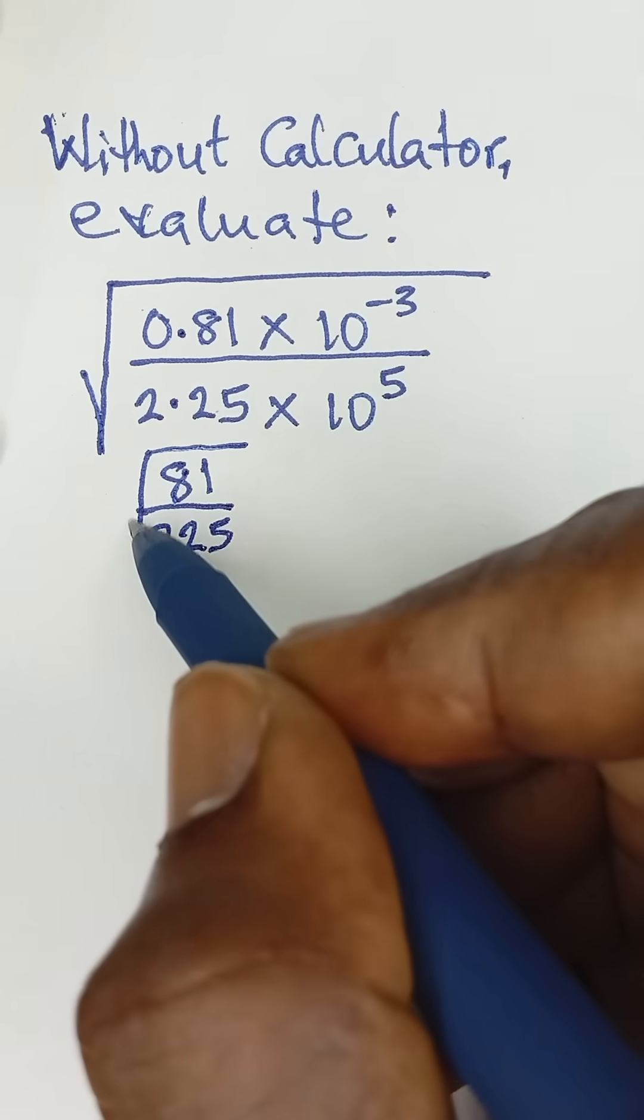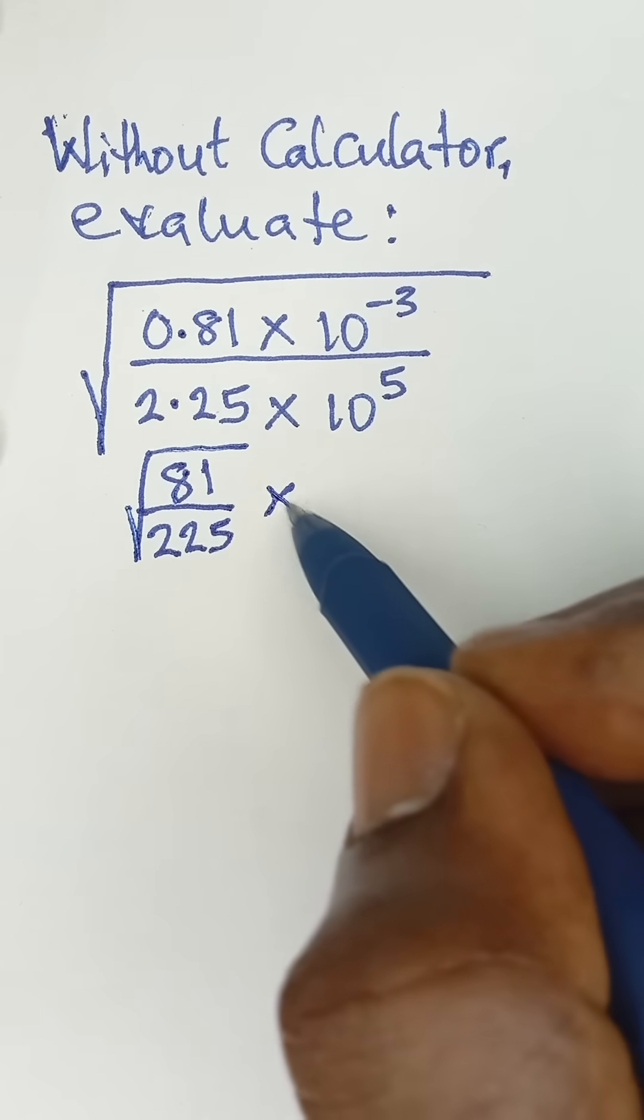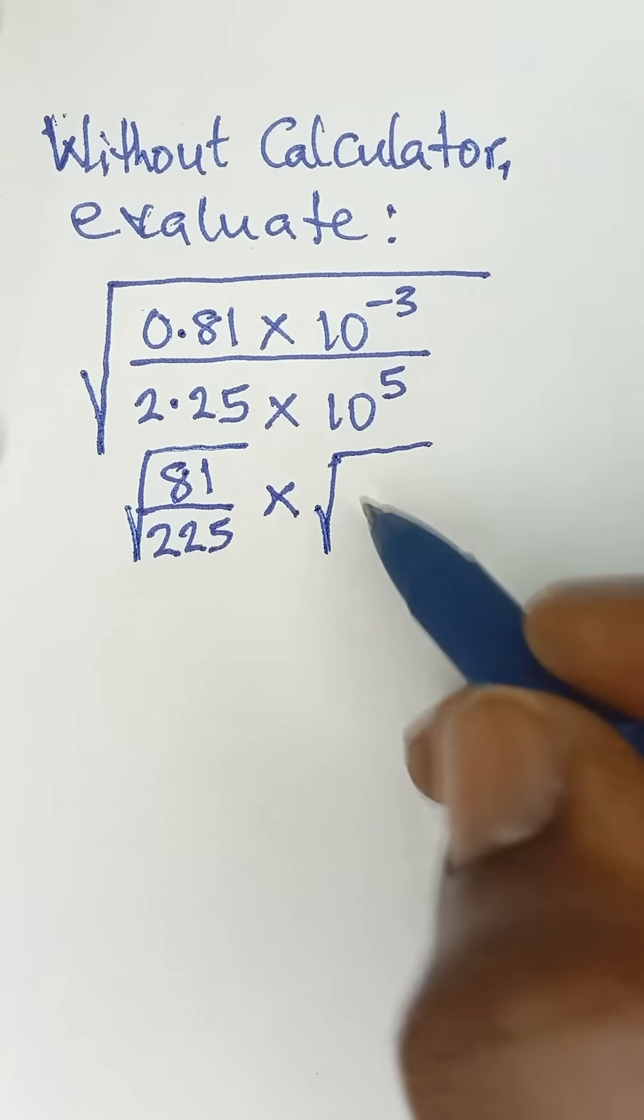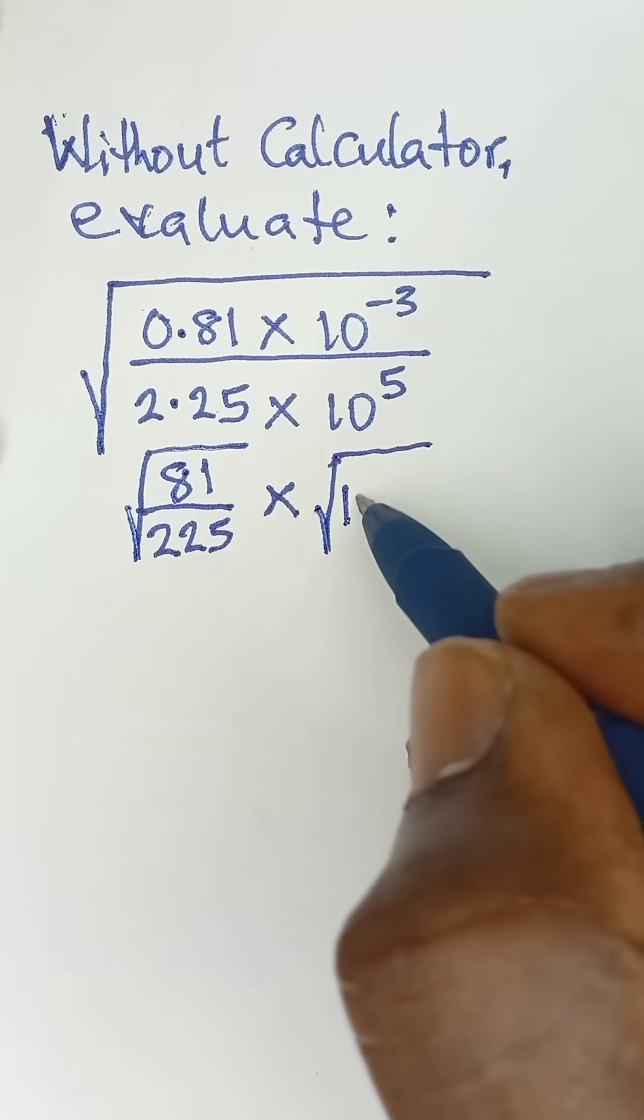So that automatically we have 81, then all divided by 225, and then we can take the square root of that and then multiply by the square root of 10 raised to the power negative 3.